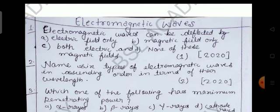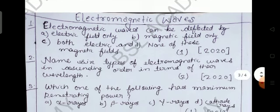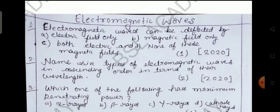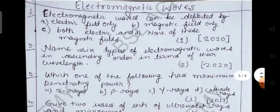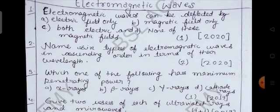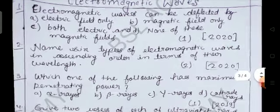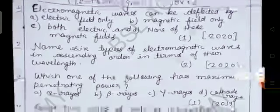The first question: electromagnetic waves can be deflected by a) electric field only, option b) magnetic field only, option c) both electric and magnetic fields, option d) none of these. So please answer it. And here you can see this is objective question of one mark asked in 2020.